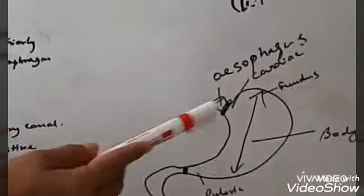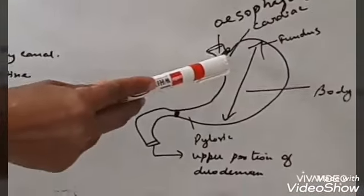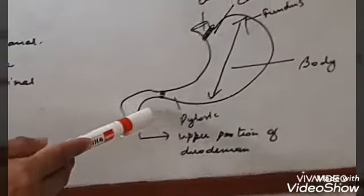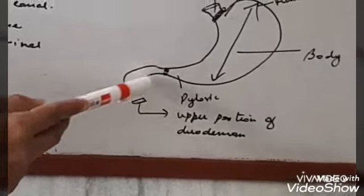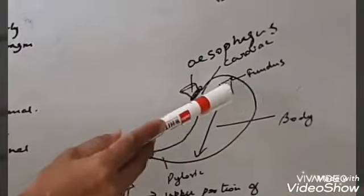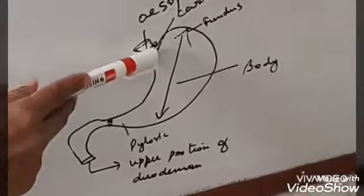The stomach is divided into three main parts: cardiac, fundus, and pyloric. The cardiac part is the entry region where the esophagus enters the stomach. The pyloric part is the end portion where the stomach meets the upper part of the duodenum. The bulged part of the stomach is called the fundus, and the entire middle region is called the body of the stomach. The two black spots in my diagram are the cardiac sphincter and the pyloric sphincter.